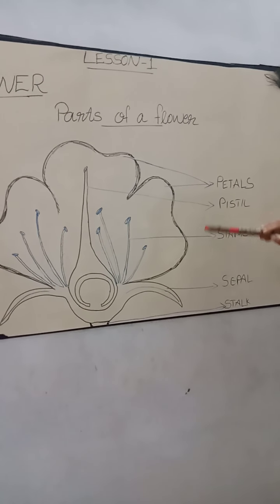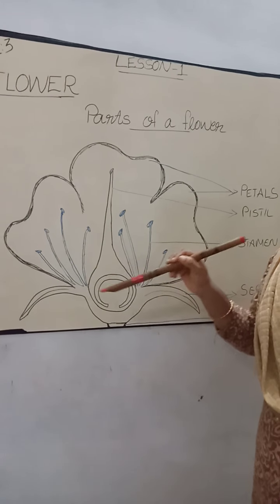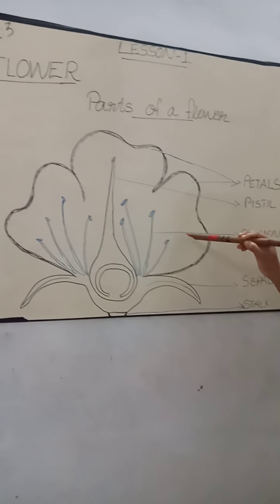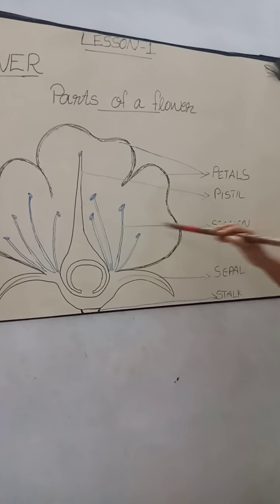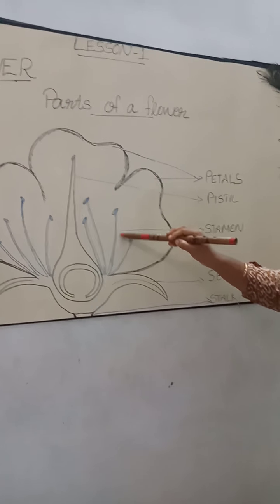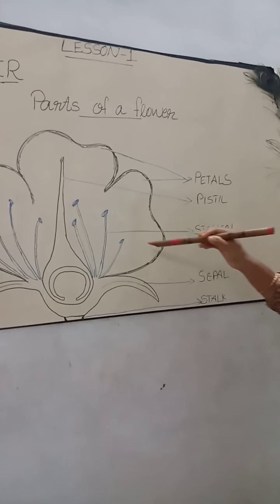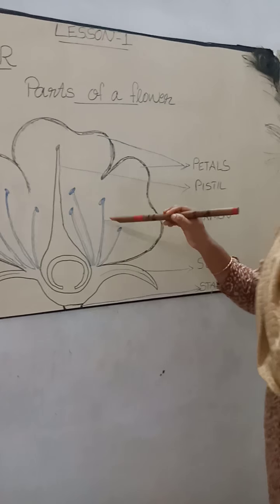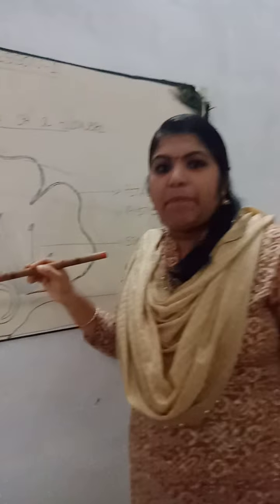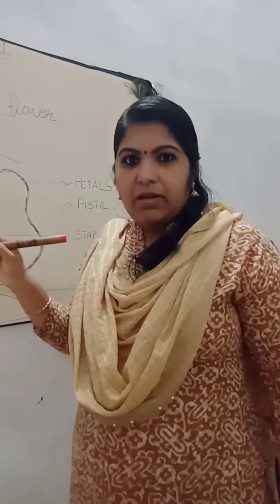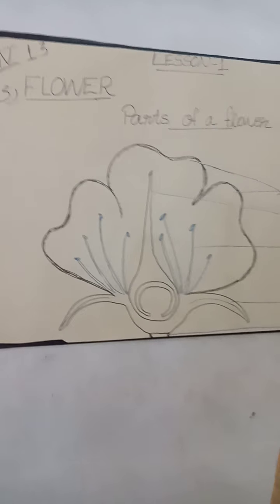Then this flower also consists of the male reproductive organ, that is known as stamens. So stamens is the male reproductive organ. All of you clear? I will show with the help of a flower.